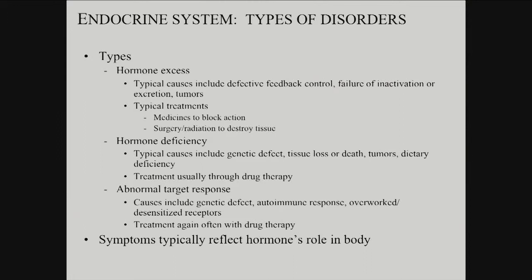There is another category: you can have exactly the right amount of hormone, but the downstream tissue is not responding to it correctly. This includes some kinds of diabetes, for example — you can have a failure in the receptor, autoimmune issues, or desensitized receptors. This can be harder to treat — if the receptor pathway is not there, how do you treat it? Sometimes you can overcome it with more drugs or higher concentrations, but sometimes you can't. And that's one thing that makes certain kinds of diabetes hard to treat.